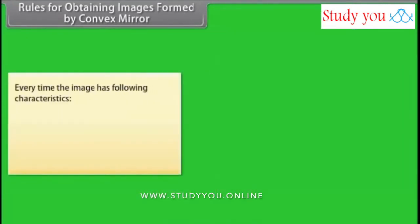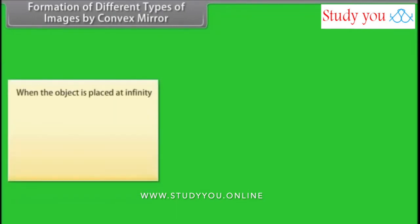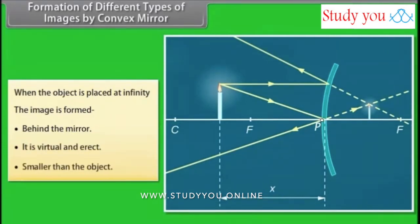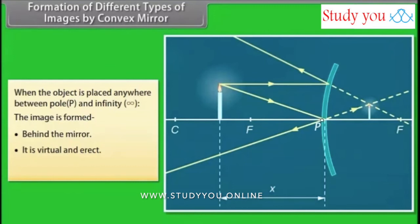For a convex mirror, every time the image has the following characteristics: the image is formed behind the mirror, it is virtual and erect, and smaller than the object. When the object is at infinity, the image is formed behind the mirror — virtual, erect, and smaller than the object. When the object is placed anywhere between pole P and infinity, the image is formed behind the mirror — virtual, erect, and smaller than the object.